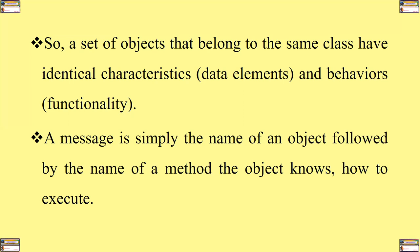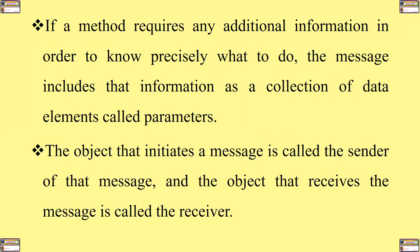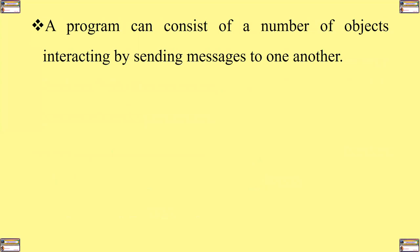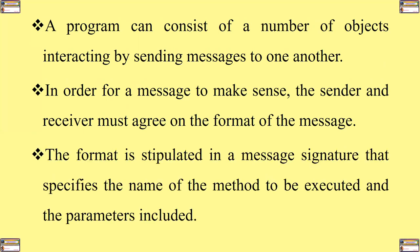A message is simply the name of an object followed by the name of a method that the object knows how to execute. If a method requires any additional information in order to know precisely what to do, the message includes that information as a collection of data elements called parameters. The object that initiates a message is called the sender of that message, and the object that receives the message is called the receiver. A program can therefore consist of a number of objects that interact together by sending messages to one another. In order for a message to make sense, the sender and the receiver must agree on the format of the message. The format is stipulated in a message signature that specifies the name of the method to be executed and the parameters included.